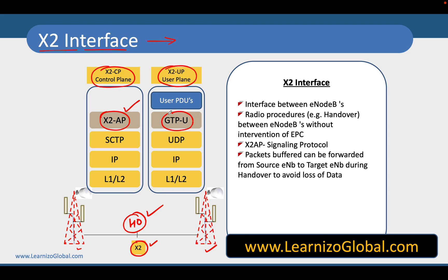Using this interface, two eNodeBs can talk to each other related to one user's handover. They can set up and reserve resources, and can communicate with each other. Once the handover has happened, the source eNodeB can actually transfer all the user data to the target eNodeB, so that the target eNodeB can send it to the user.